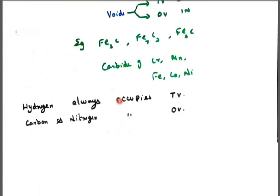Hydrogen always occupies in tetrahedral void. Carbon and nitrogen always occupied in octahedral void. This is the tip for you to find out whether that particular compound is a tetrahedral void or octahedral void. Carbon, nitrogen is present, it will produce octahedral void. Hydrogen always will have a tetrahedral void.